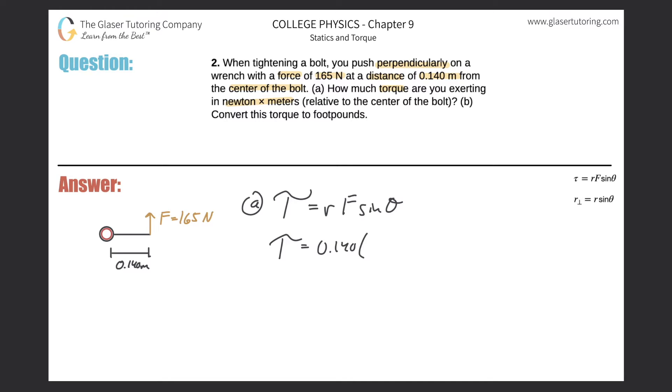So torque, just plug everything in. The lever arm is going to be 0.140, force is 165, sine of the angle between the two—look at the picture—90 degrees. So we just plug it in: 0.14 times 165 sine of 90 is one, so 23.1. So we get a value of 23.1 newton-meters.